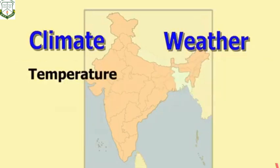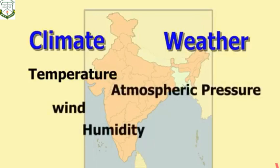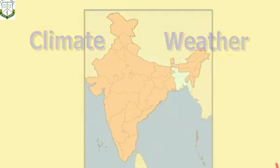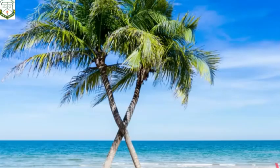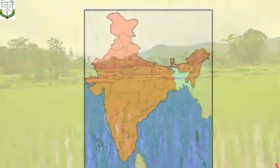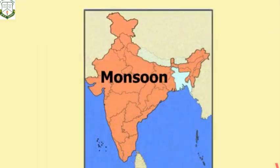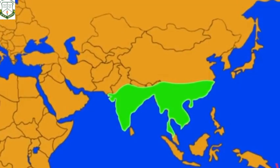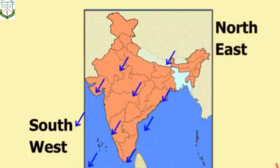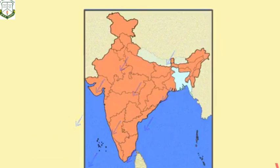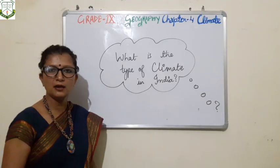Climate and weather are made up of the same elements: temperature, atmospheric pressure, wind, humidity, and precipitation. Weather conditions fluctuate very often within a day. On the basis of generalized monthly atmospheric conditions, weather is divided into seasons such as winter, summer, and rainy. The climate of India is described as monsoon type, which is found mainly in South and Southeast Asia. The word monsoon is derived from the Arabic word 'mausim', which refers to winds that change direction. In India, winds go from southwest to northeast and northeast to southwest.